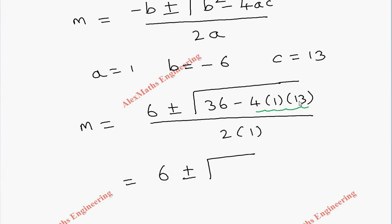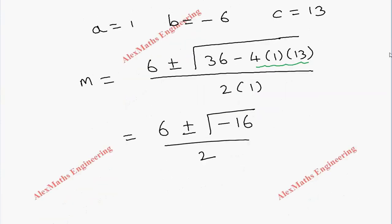After this we have the first term 6, then ± √... when I multiply these two we get 52, then 36 - 52, this is -16. Inside the square root we have a negative, and this is 6 ± √16 = 6 ± 4. Since there is a minus, we put 4i divided by 2.